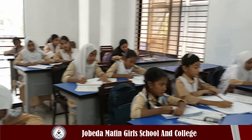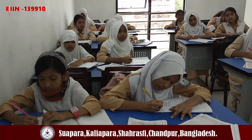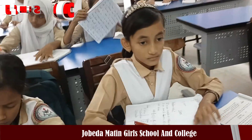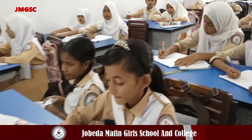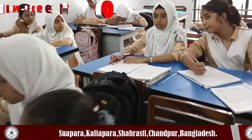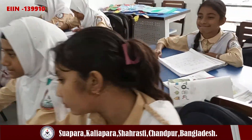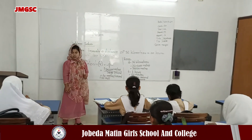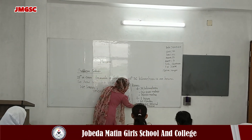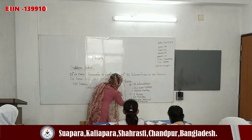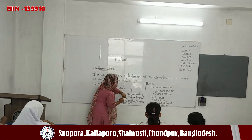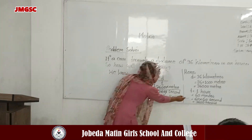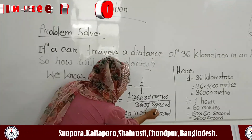Do you understand? Yes please! Right quickly! P equals 36,000. And P equals 36,000. Now we will put P equals 36,000 meters. Then P equals 36,000. Clear?